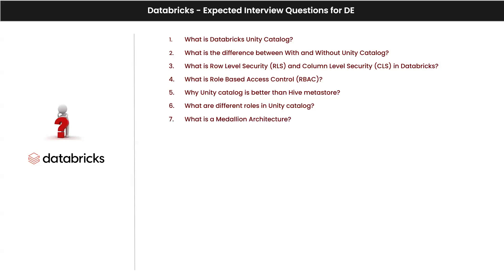What is medallion architecture — we are all aware. Medallion architecture is basically what we followed in our project: bronze, silver, gold layers. To have better processing of data, we generally follow the medallion architecture. You can explain: medallion architecture is nothing but systematic processing of data in different layers — raw, intermediate, curated — you can use the name as per convenience.